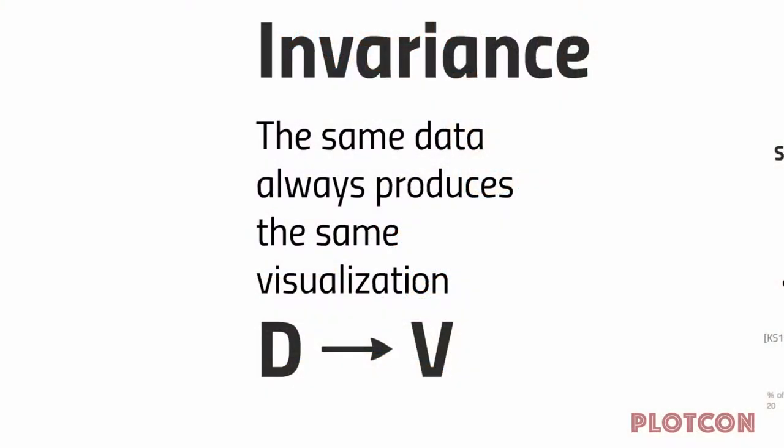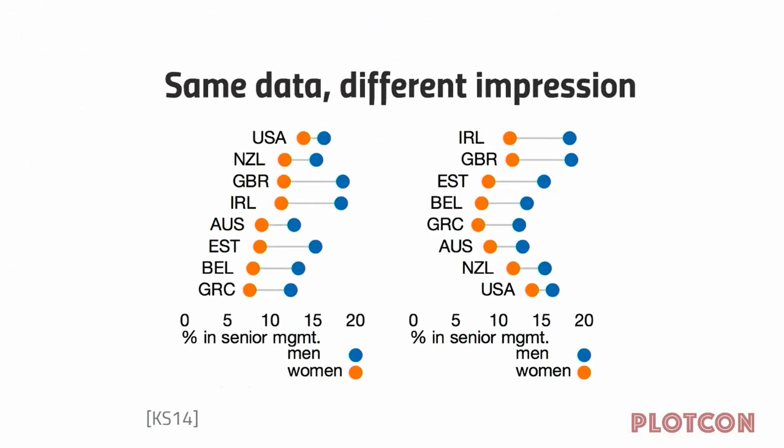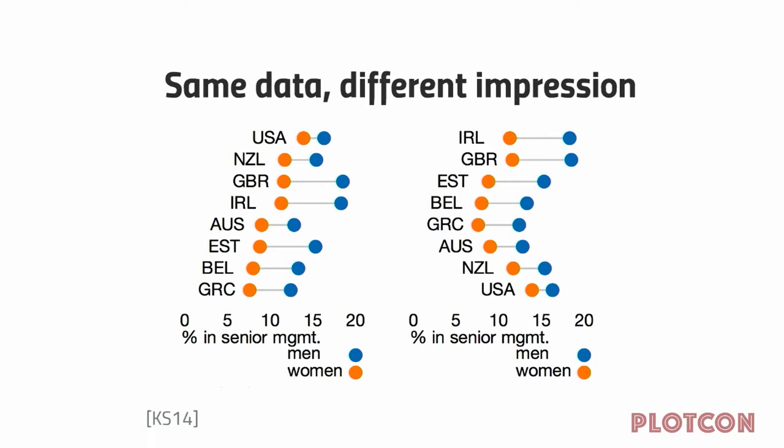The idea behind invariance is that the same data always produces the same visualization. It seems obvious, but in practice it happens very rarely. These two visualizations show exactly the same data, but the visualizations themselves are substantially different — and this is what we're going to call a hallucination in visualization. I'll give you a mathematical definition in a moment.